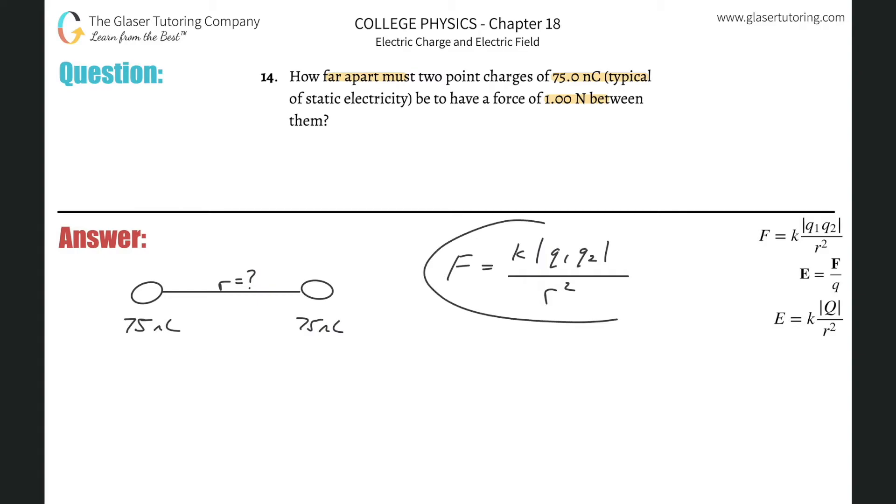It's asking for how far apart, so we know we need to solve that for r. So literally just bring that out of the denominator up into the numerator, bring this from the numerator down into the denominator, and almost voila, we just have to then take the square root of both sides. And when we do that, boom, there is our formula.